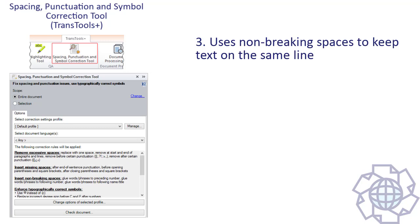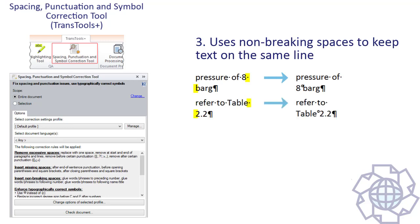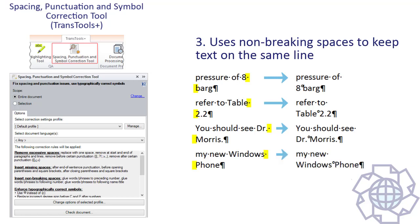For example, it uses non-breaking spaces between a number and the following unit of measurement, as in '8 bar gauge'. After a word that has a number, as in 'Table 2.2'. After certain words that precede names or titles, as in 'Dr. Morris'. Inside composite names that consist of several words, as in 'Windows Phone'. And even after short prepositions.